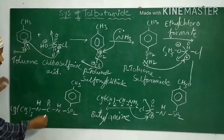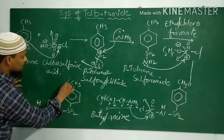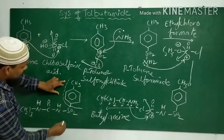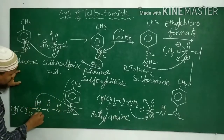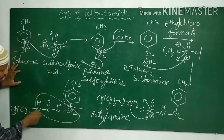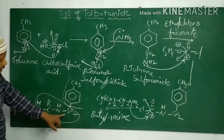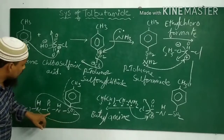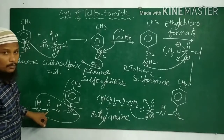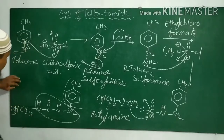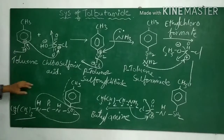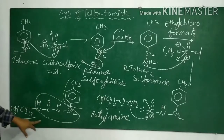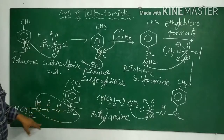Looking at the structure of Tolbutamide: this part is the toluene (tol-) group, this one is the sulfonamide (S-NH), this one is the carbonamide (C=O-NH), and this one is the butyl group — CH2CH2CH2CH3, which is 4 carbons total. So: tol- + butyl + amide = Tolbutamide.